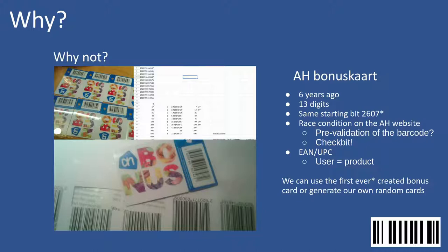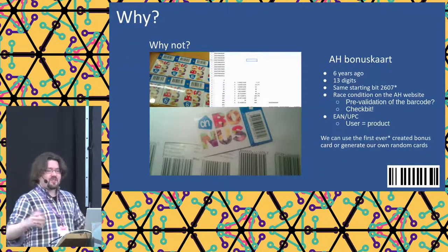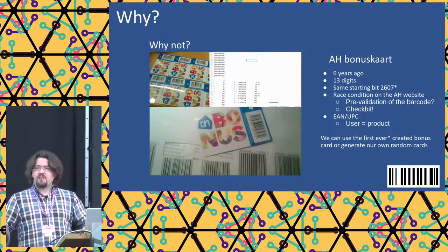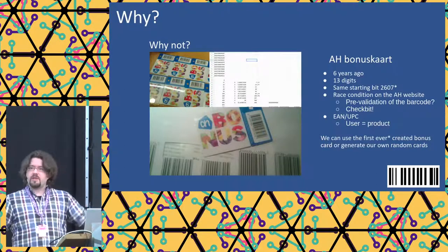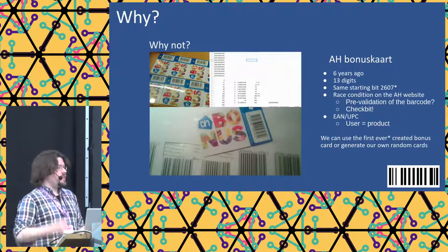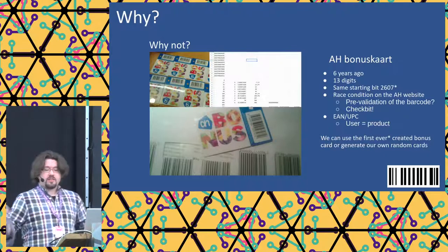I noticed a small race condition: some randomly made-up numbers were instantly declined, while numbers that were sort of valid took about half a second. That indicated a pre-validation step — there was a check bit. Putting it all together, I realized these are actually product codes, like what you find on a pack of cookies. Now the user is the product too. This let me figure out the conditions for a valid bonus card: it needed to be within a certain range and have a valid check bit, so I could create all the bonus cards.